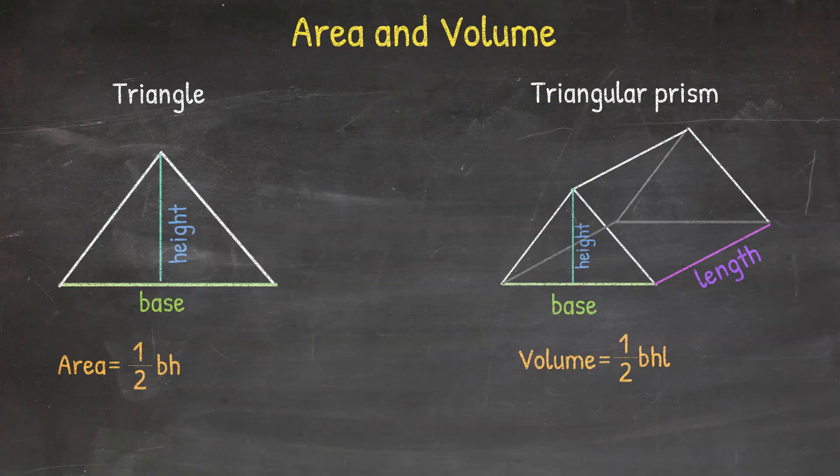In addition to this, we need to multiply by the length. Once we perform this operation, we find the volume of the triangular prism.